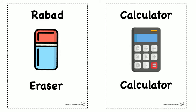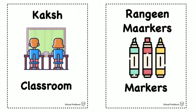Calculator — thank goodness — is just calculator. This is one of those words that you would say with an Indian accent, so you would say calculator. Calculator is a calculator. Kaksh is classroom. Kaksh, classroom.